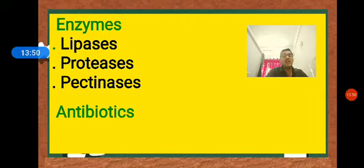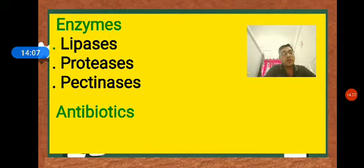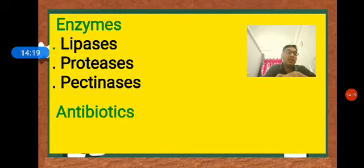The most commonly used antibiotic is penicillin. It was the first antibiotic, discovered by scientist Alexander Fleming in 1928 from the fungus Penicillium notatum. Its full potential was later established by two other scientists.